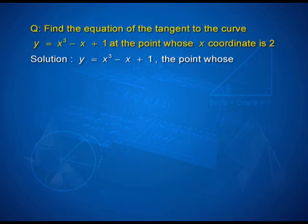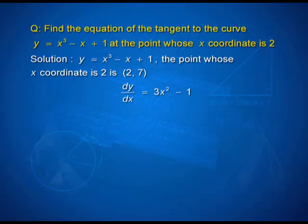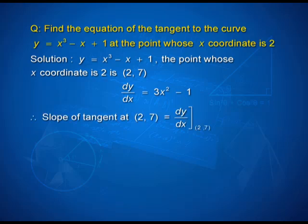Here is a simple question to begin with. Find the equation of the tangent to the curve y = x³ − x + 1 at the point whose x-coordinate is 2. To begin, you must know the point at which the tangent is to be constructed, that is (x₁, y₁). Since it is a point on the curve when x is 2, y can be calculated by substituting x = 2 into the equation of the function. dy/dx is 3x² − 1. So the slope of the tangent at (2, 7) is the value of dy/dx at (2, 7), resulting in the number 11.